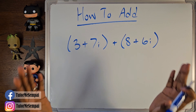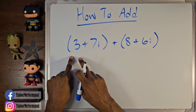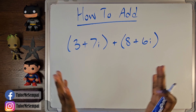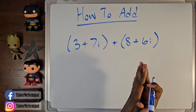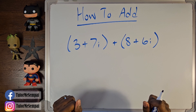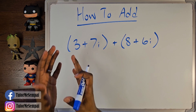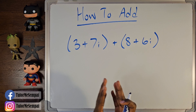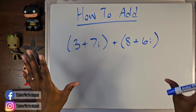Let's jump into this example. We have two complex numbers and we want to add both of them: we have 3 plus 7i, and we have 8 plus 6i. The main thing you want to do here is group like terms. When we have complex numbers, your complex number is made up of two different components: your real component and your imaginary component. When you're grouping like terms, you're going to be grouping your reals together, then you're going to group your imaginaries together, and you'll add them separately.